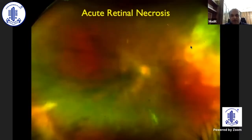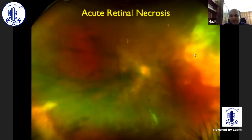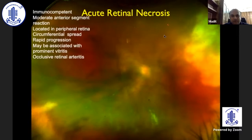Acute retinal necrosis — as Dr. Natasha mentioned in her case presentation — you may see dense vitritis and then wedge-like or tongue-like lesions in the periphery. Once you see this pattern, you may be dealing with acute retinal necrosis. ARN can happen in immunocompetent individuals. You may have a moderate to even severe anterior segment reaction. Lesions are located in the peripheral retina, with circumferential spread, and rapidly progress if not treated in time.